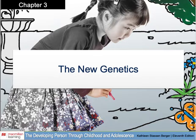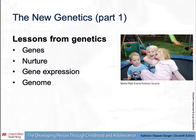Welcome to Chapter 3, the lecture for The New Genetics. In this chapter, what will you learn? Genetically, how is each zygote unique? How are twins different from other siblings? Who is likely to carry genes that they do not know they have? And why are far more abnormal zygotes created than abnormal babies born?